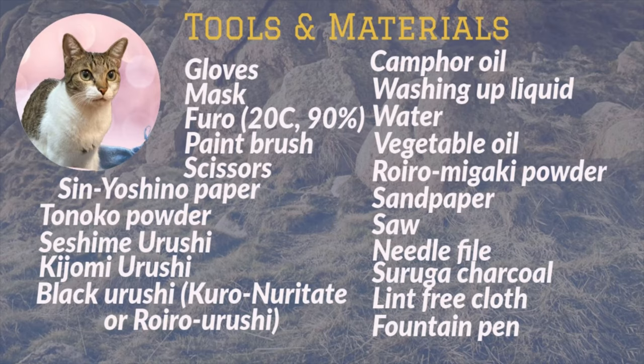For this project you will need gloves and face mask for your safety. Fulo that we made in lesson 2. Set it at 20 degrees Celsius and 90% humidity. Paint brush, scissors, yellow tonoko powder. We are using 2 types of raw Urushi: Kijoumi and Seshime. If you don't have both you can just use Kijoumi. Black Urushi. You may use Kuro Nuritate or Roilo Urushi.